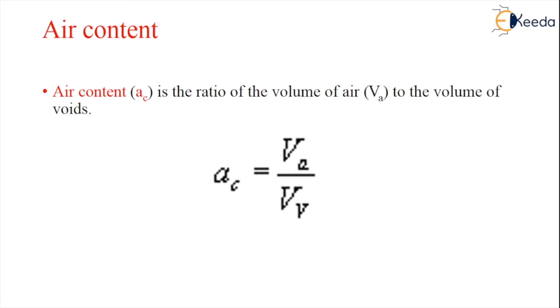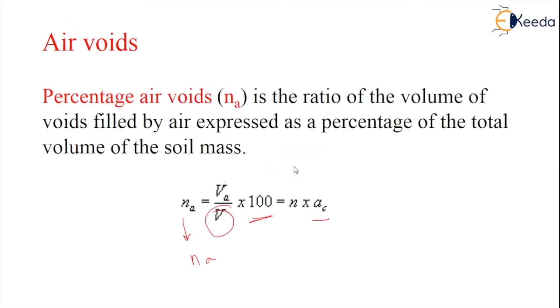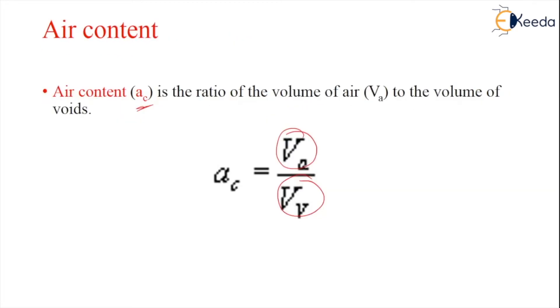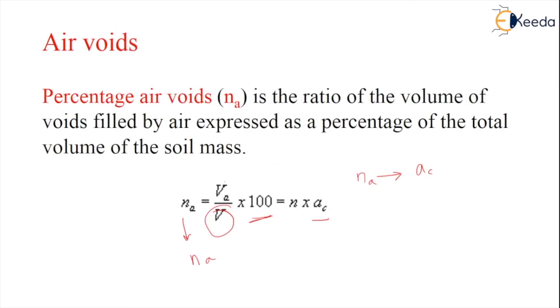So what do you mean by air content? It is denoted by AC. Air content is a ratio of the volume of air to the volume of voids. When we come to the relationship between percentage of air voids and AC, it is related as NA equals N into AC. What is N? N is the porosity.